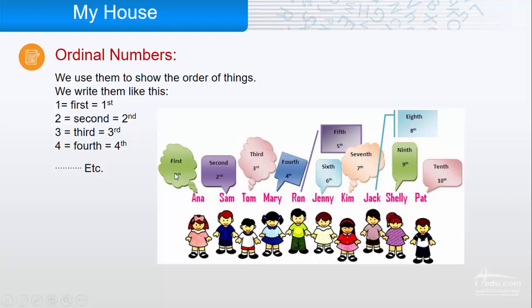Anna is first. Sam is second. Tom is third. Mary is fourth, Ron is fifth, sixth, seventh, eighth, ninth, and tenth.